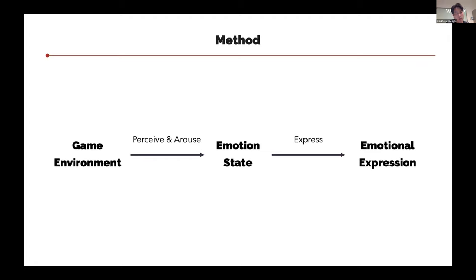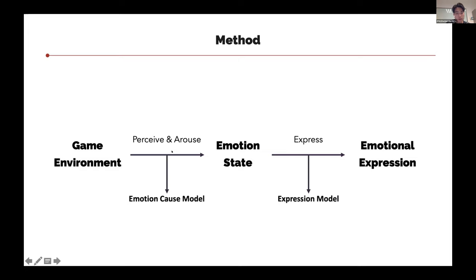In this work, we take the VR volleyball game as an example scene, and our goal is to enhance the emotional experience of users in the game. Our approach is to build emotional intelligence for virtual characters, meaning we want the virtual characters to imitate real athletes not only from the physical aspects, but also from the emotional aspects. We propose a solution which includes two consecutive models: the emotion cost model for the first stage and the expression model for the second stage.